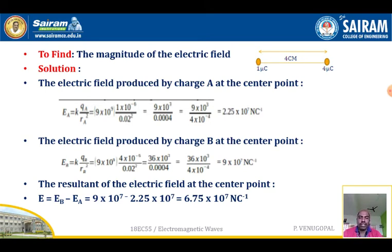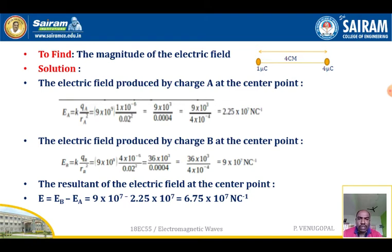The electric field produced by charge B at the center point: EB equals k times QB divided by rB-squared, that is 9 times 10 to the power 9 times 4 times 10 to the power minus 6, divided by 0.02 squared, which equals 9 times 10 to the power 7 newtons per coulomb. The resultant electric field at the center point: E equals EB minus EA, which is 9 times 10 to the power 7 minus 2.25 times 10 to the power 7, giving 6.75 times 10 to the power 7 newtons per coulomb. This is the net electric field at the center of QA and QB.